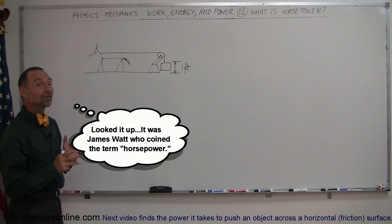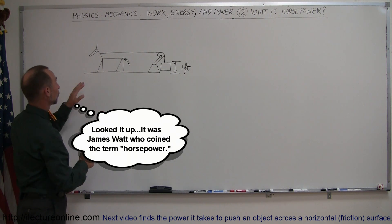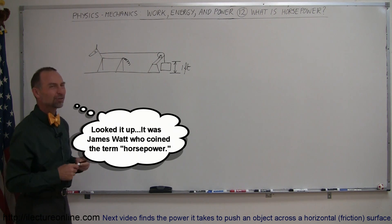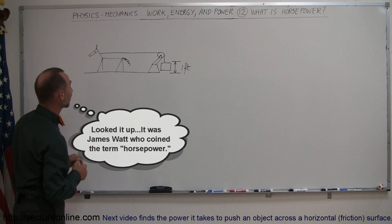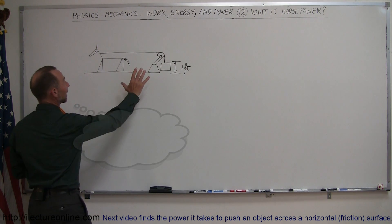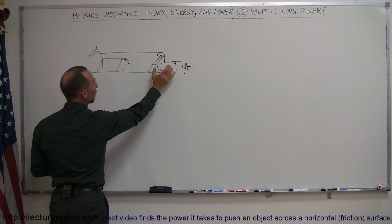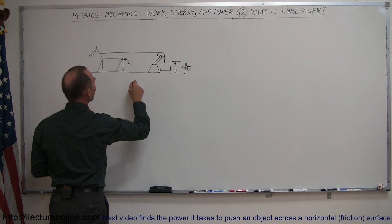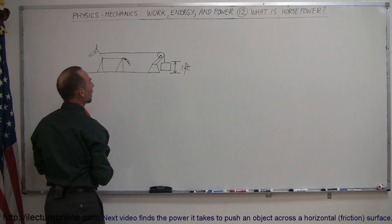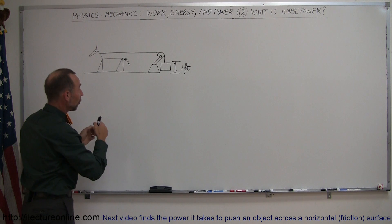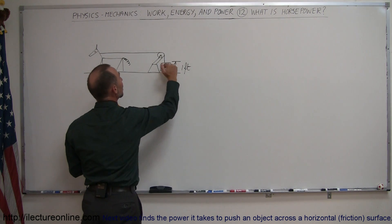But this is kind of what the experiment looked like. They took a horse - of course it looked a little better than this, but my drawing skills aren't so good, so that's the best I can do. We have a contraption like this with a pulley. We had a big weight sitting there. They had it attached to the horse and then they made the horse walk forward, lifting the object up.